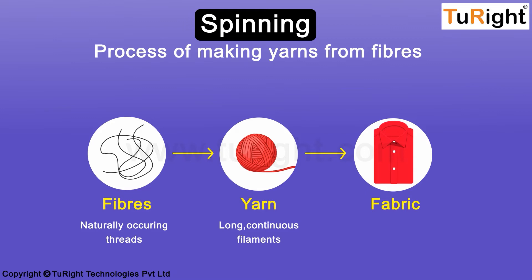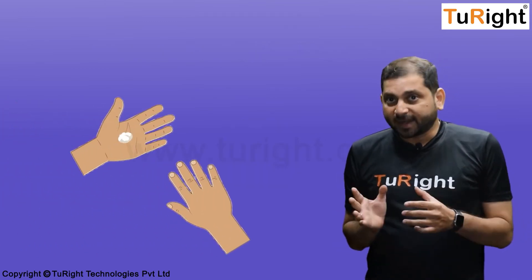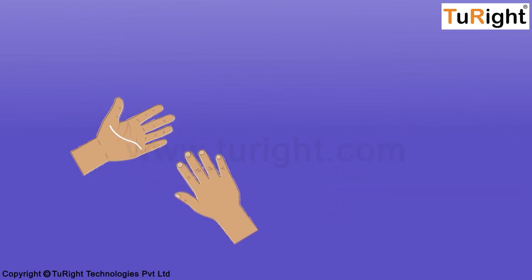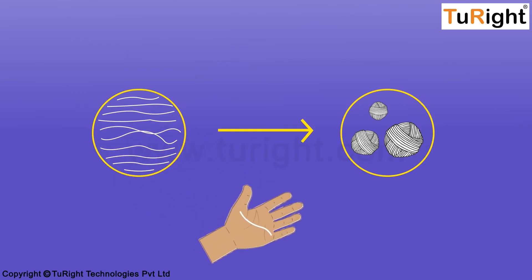So spinning is the process where threads are converted into yarns. But how is this done? If you take a cotton thread between your palms and press it gently, what you get is a slender, long filament-like structure — this is nothing but yarn. We know that there are tons of threads that are spun into yarns every day.